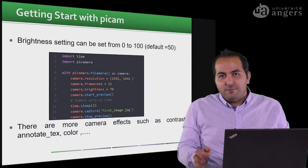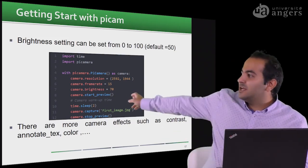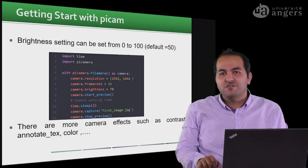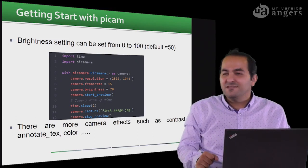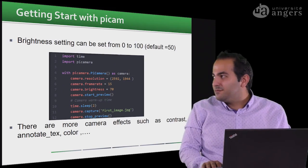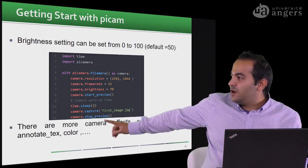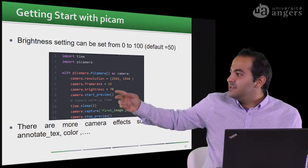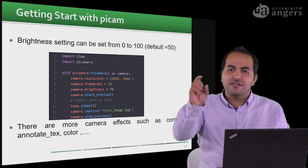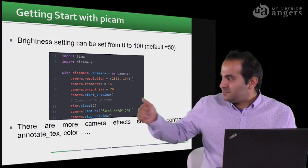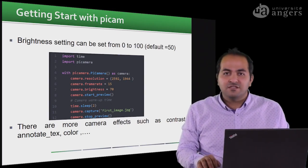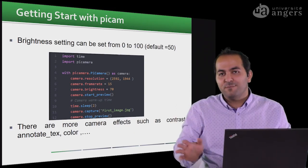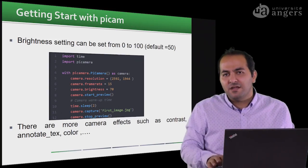You can also adjust other camera parameters. For brightness, the value should be between 0 and 100 — a value of 100 gives maximum brightness (the image will be white) and 0 gives minimum brightness (fully black). You can also adjust contrast based on your scene, use annotate_text to add text or a phrase to your image, and use camera.color to set color effects such as a blue or red tint.